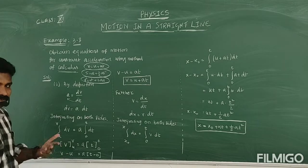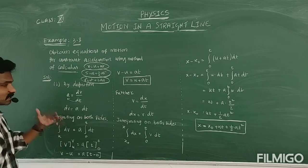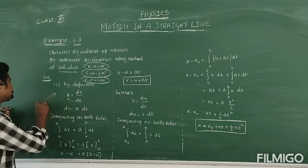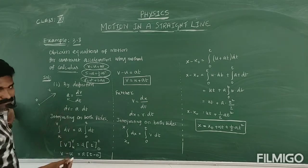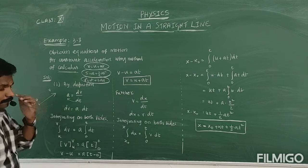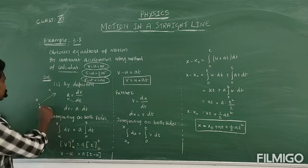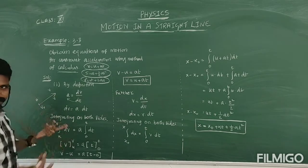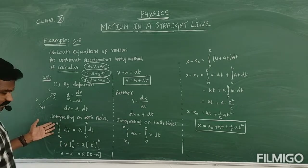Now we apply the limits. For velocity, the limit goes from initial velocity U to final velocity V. So the left side becomes V minus U. For the right side, acceleration is constant and outside the integral, and time goes from 0 to T.